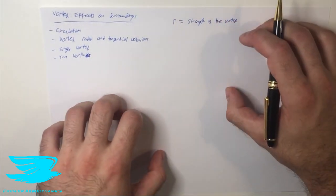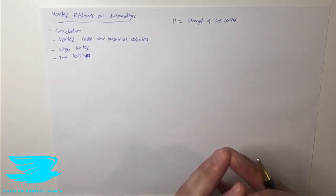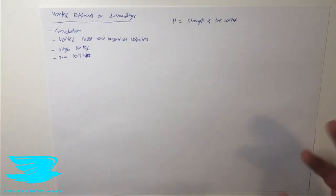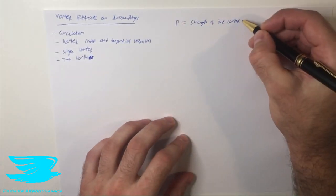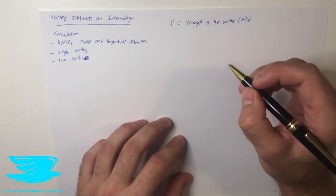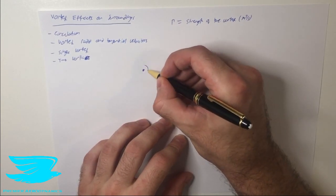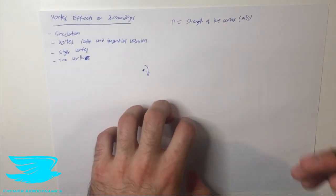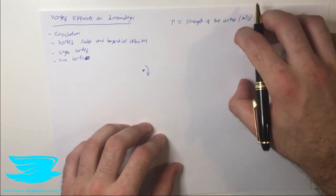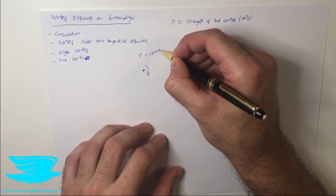This is very important because if we have two different vortices, we can integrate around them — the closed-loop integral of the velocity — and figure out what the strength of each vortex is and compare them. This is in units of meters squared per second in SI units. For a vortex spinning clockwise, a clockwise spin will result in a positive circulation. Let's say the circulation for this is 10 meters squared per second.